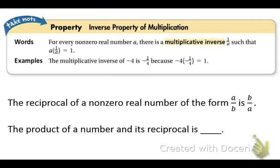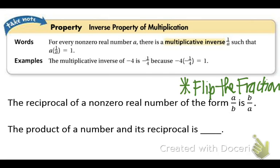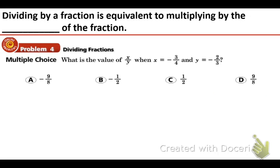The reciprocal of a non-zero real number of the form a over b is b over a. Okay, so like I just said, you flip the fraction. The product of a number and its reciprocal is 1. And when you divide the fraction, it's equivalent to multiplying by the reciprocal of the fraction. So dividing by a fraction is the same thing as multiplying by the flip of the reciprocal. And that's going to be especially useful in this next example.